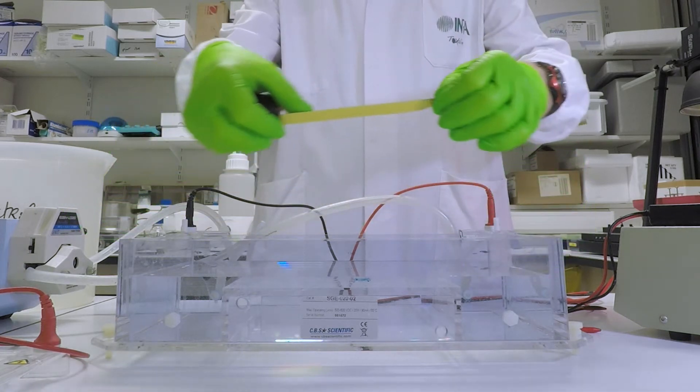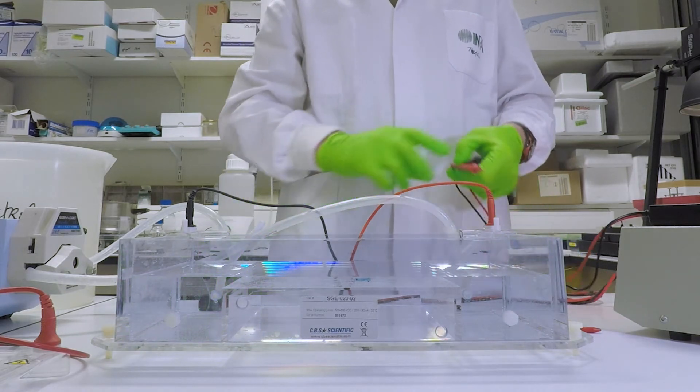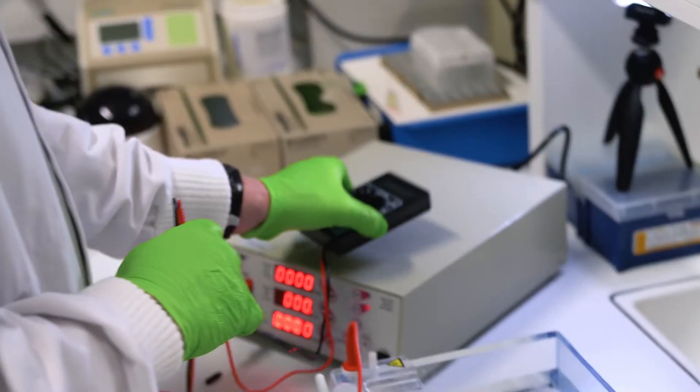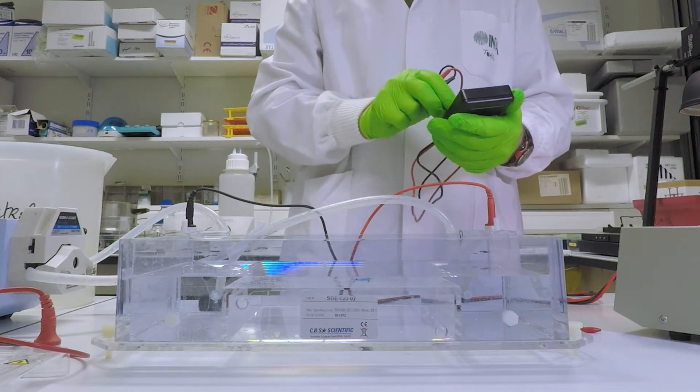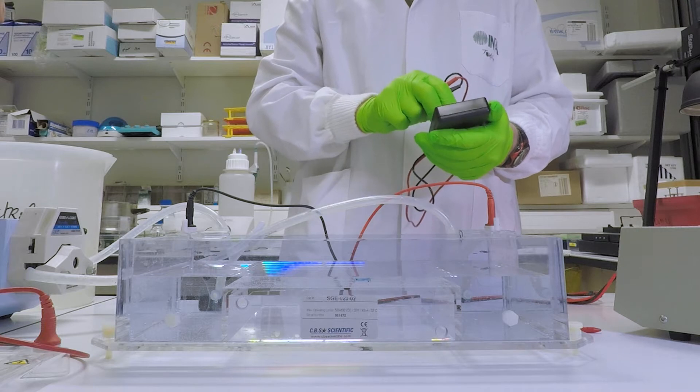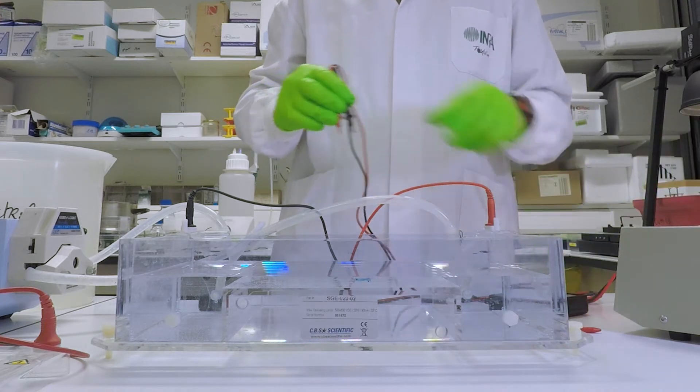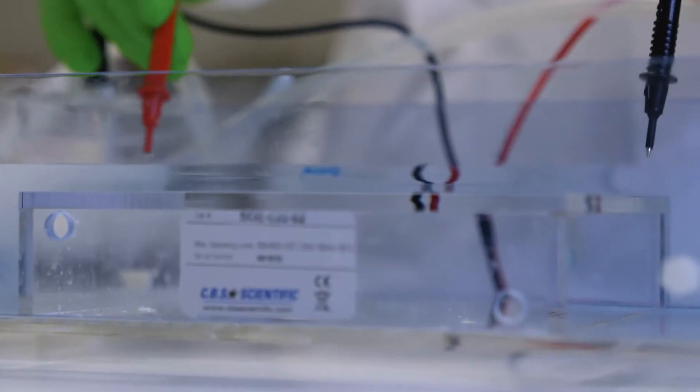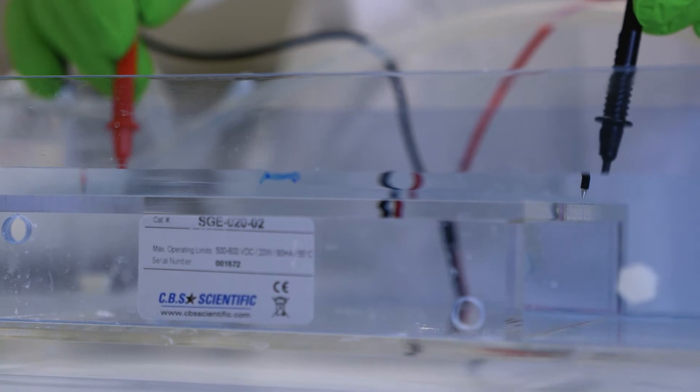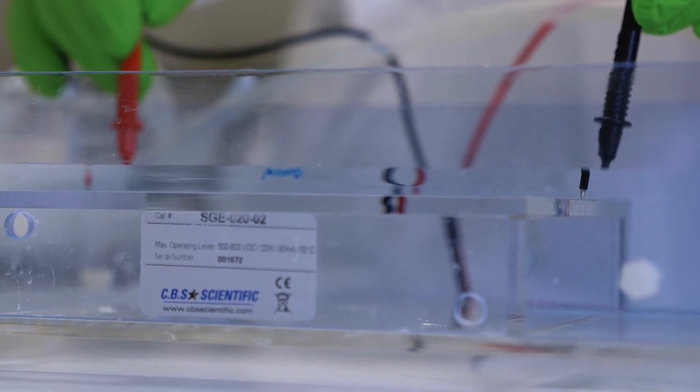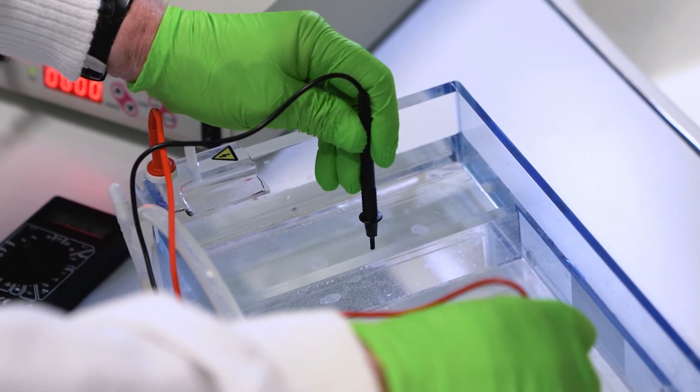But we subtract a tiny bit because you cannot measure at the very end of the platform. Then I use a digital voltmeter. I switched it on like that. And then I put the two probes into position on both sides. A few millimeters, as I said, from the edge of the platform. And I lift it up a tiny bit. And then I measure. It fluctuates a bit. But 10.7 volts.